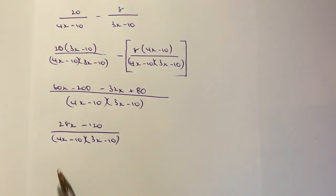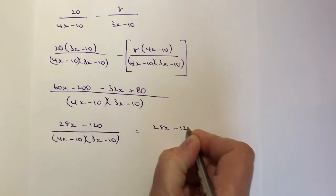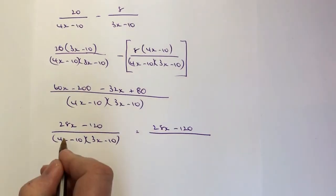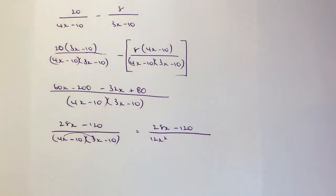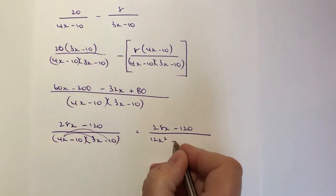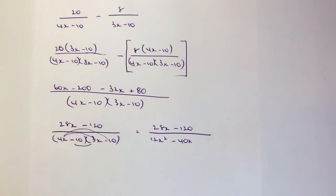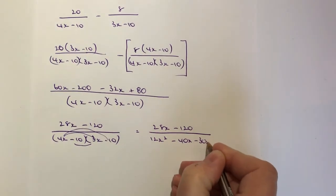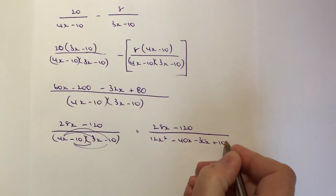Now at the bottom here, I need to multiply out these bracketed terms. So I'm just going to do that. I'll write this off to one side. I've got 28x minus 120 on the top. And on the bottom, I've got 4x times 3x. Well, that's going to be 12x squared. 4x times minus 10 is going to be minus 40x. Minus 10 times 3x is minus 30x. And then I've also got minus 10 times minus 10 is plus 100.